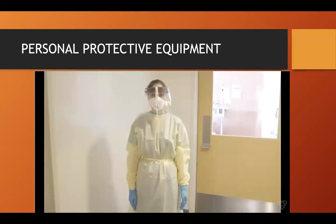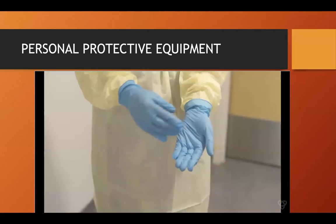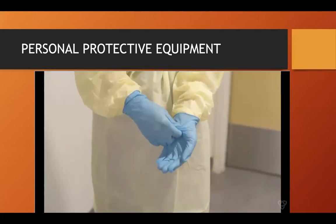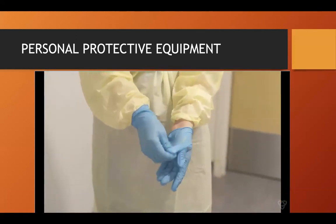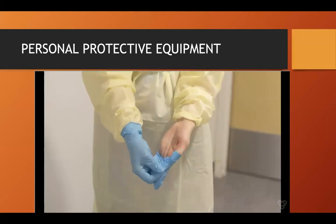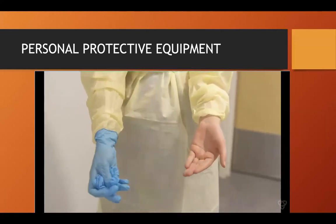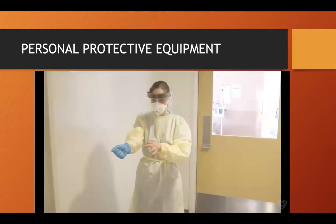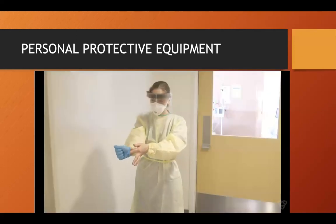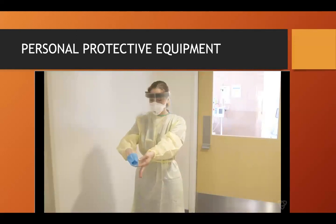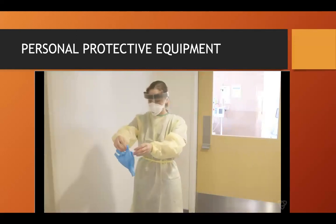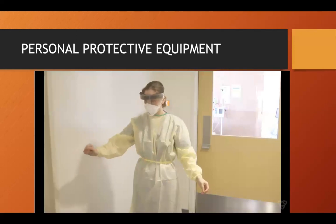When doffing your PPE, step into the ante room, ensuring the door is closed behind you. Remove the first glove by pulling it up and away from the middle of your palm, ensuring no skin contact. Hold the glove in the other hand. To remove the second glove, place a finger inside the clean area of the glove and push it off, balling up both gloves together, then throw into the garbage.